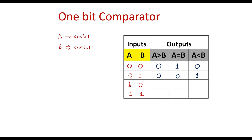For a=1 and b=0, a is greater than b, so the a-greater-than-b output is high and the rest two columns are 0. When a=1 and b=1, a is equal to b, so the equal output is 1 and the other two are 0. This is the complete truth table of the one-bit comparator.